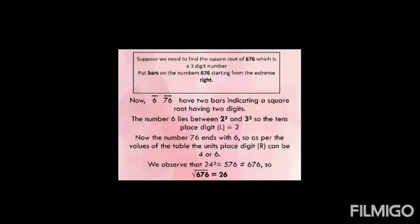Now let us take a three-digit number: 676. Put bars from the extreme right — 76 comes under one bar and 6 under another. The number 6 is not paired because it is a three-digit number. The number 6 lies between the square of 2 (4) and the square of 3 (9), so we take 2 as the leftmost digit. The number 76 ends with 6, so the unit's place digit can be 4 or 6. Squaring 24 gives 576, which is not 676, so the unit's place digit is 6, and the square root of 676 is 26.